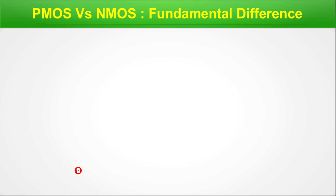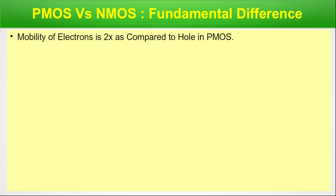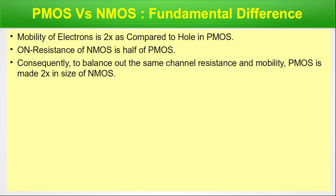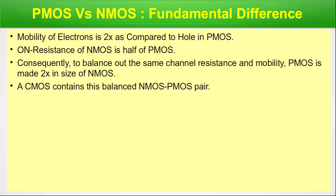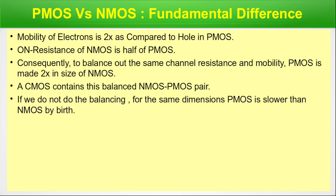Regarding the fundamental difference between PMOS and NMOS: mobility of electrons is twice that of holes in PMOS. The on-resistance of NMOS is half that of PMOS. Consequently, to balance out the same channel resistance and mobility, PMOS is made twice larger in size with respect to NMOS. A CMOS contains this balanced NMOS and PMOS pair. For the process corner, we will be focusing mostly on speed — so the corner variation on process variation will focus on the speed of the NMOS and PMOS. If we do not do the balancing, the same dimension of PMOS is slower than NMOS, and we mitigate this by making the PMOS double the size of NMOS.